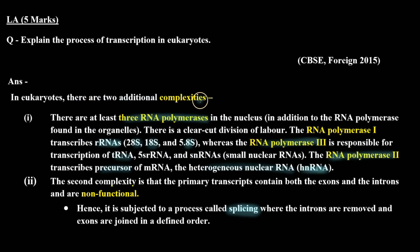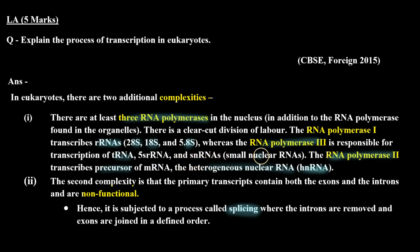In eukaryotes there are two additional complexities. First, there are at least three RNA polymerases in the nucleus, in addition to those found in organelles. There is a clear-cut division of labour. RNA polymerase 1 transcribes rRNAs — 28S, 18S, and 5.8S — whereas RNA polymerase 3 is responsible for transcription of tRNA, 5S rRNA, and snRNAs, i.e. small nuclear RNAs. RNA polymerase 2 transcribes the precursor of mRNA, the heterogeneous nuclear RNA, i.e. hnRNA.